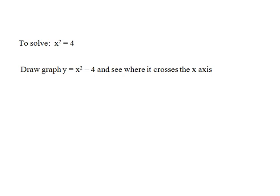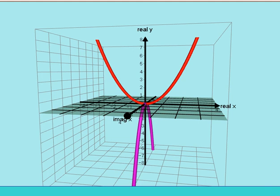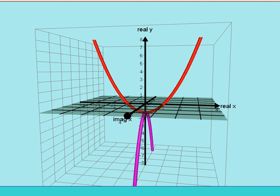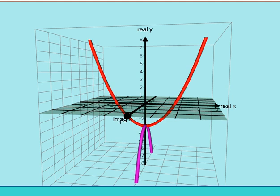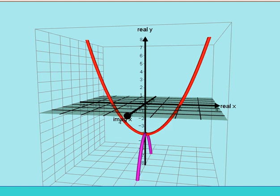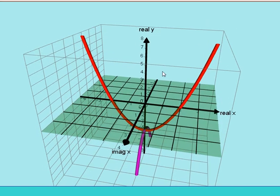Now, to solve the equation x squared equals 4, we would draw the graph of y equals x squared minus 4 and see where it crosses the x-axis. So I will change this into y equals x squared minus 4. And as we can see, it crosses the x-axis at 2 and negative 2.